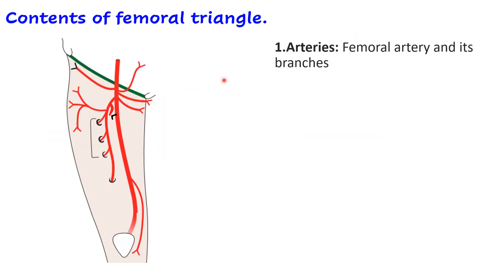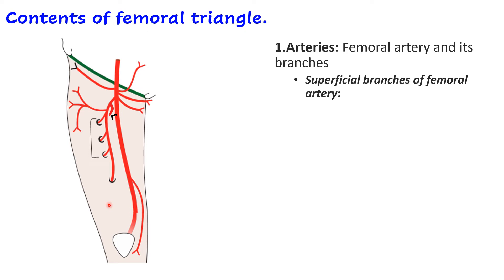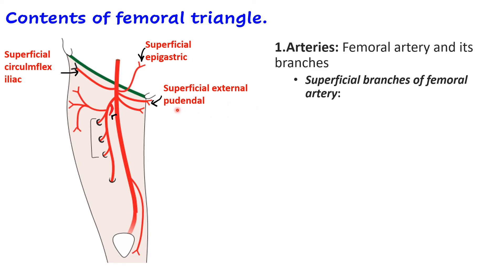Let us look at the arteries present in the femoral triangle - they are branches of the femoral artery. First, there are three superficial branches: superficial circumflex iliac, superficial epigastric, and superficial external pudendal arteries. These originate from the femoral artery within the femoral triangle, then pierce the fascia and run their course in the superficial fascia in the roof of the femoral triangle.